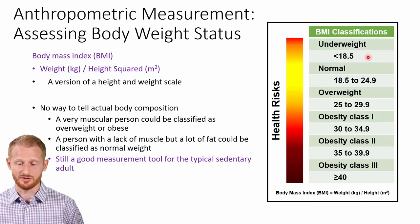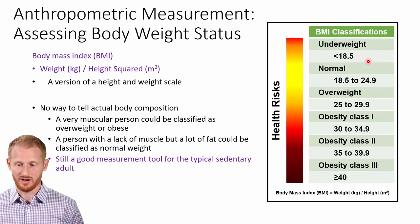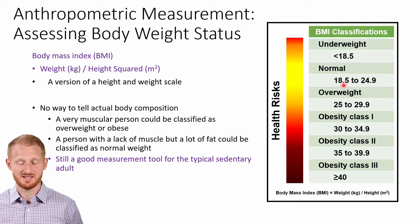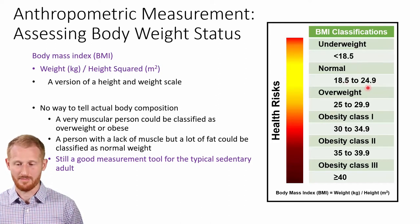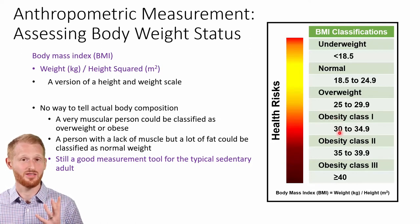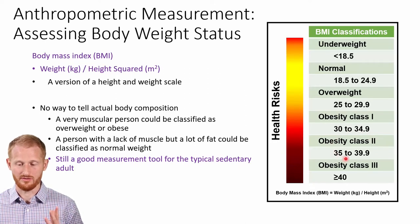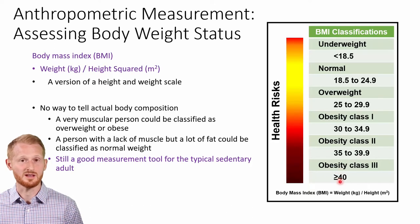These numbers are all for adults. If you have a BMI of less than 18.5, you would be considered underweight. The normal range is 18.5 to 24.9. Overweight starts at 25 and goes up to 29.9. Obesity class 1 starts at 30 and goes to 34.9. Class 2 is 35 to 39.9, and class 3 is 40 and above.